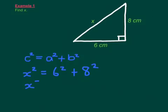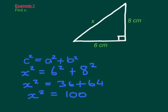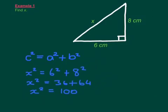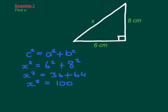So then I just work those out. X squared is equal to 36 plus 64. X squared is equal to 100. You can do all this in your calculator if you're not sure. And the square root of 100 is 10, so X equals 10. So the missing side length in this triangle is 10cm.